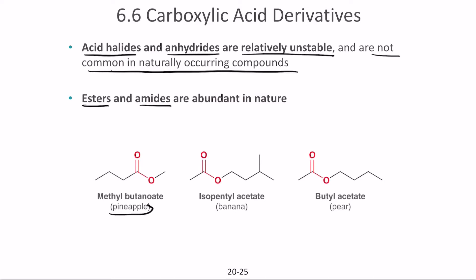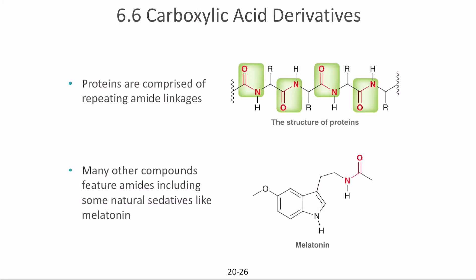For example, pineapple gets its flavor from methyl butanoate, banana from isopentyl acetate, and pear from butyl acetate. Knowing these compounds is useful because they can replicate the taste of other compounds. For instance, if a pineapple juice says 'artificial flavor,' it means there is no real pineapple extract — it has a certain compound that tastes like pineapple.